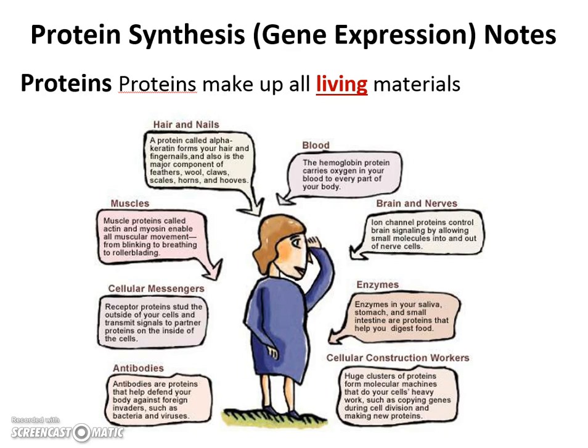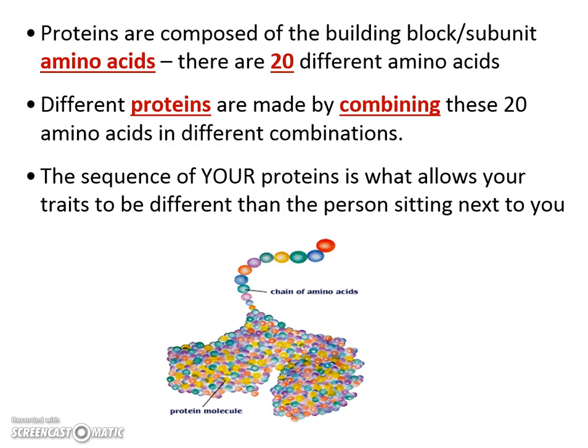Proteins make up all living material. They're in our hair, our nails, our blood, brain, nerve cells, in our cells as enzymes, antibodies, and they help with messengers as well. Gene expression is very important because you're constantly making protein. They're so important, yet there are only 20 different types and those types come from all the different foods you consume.